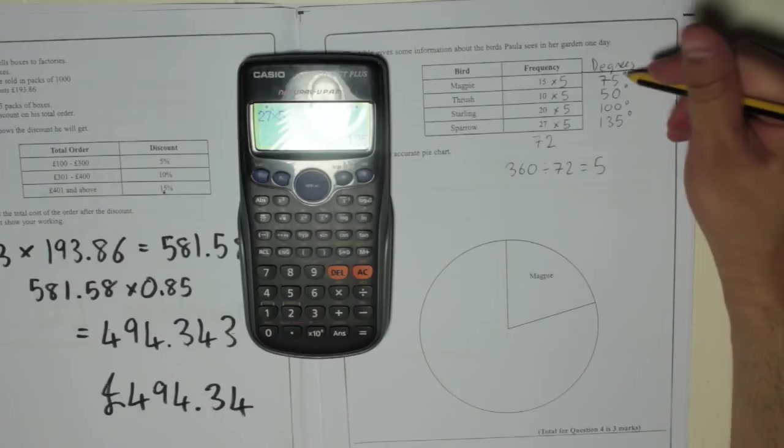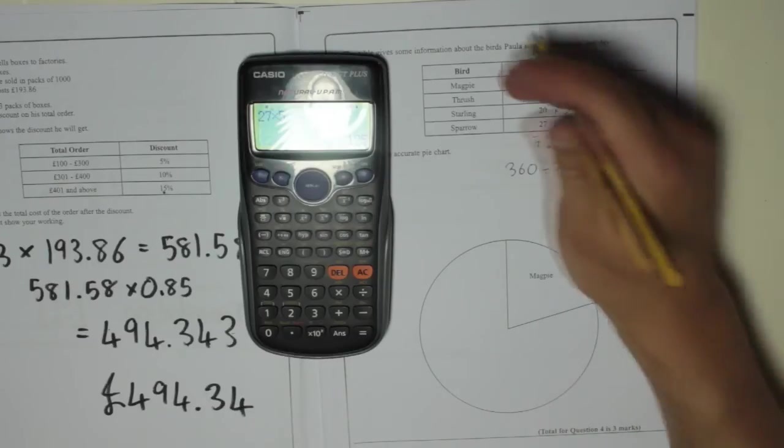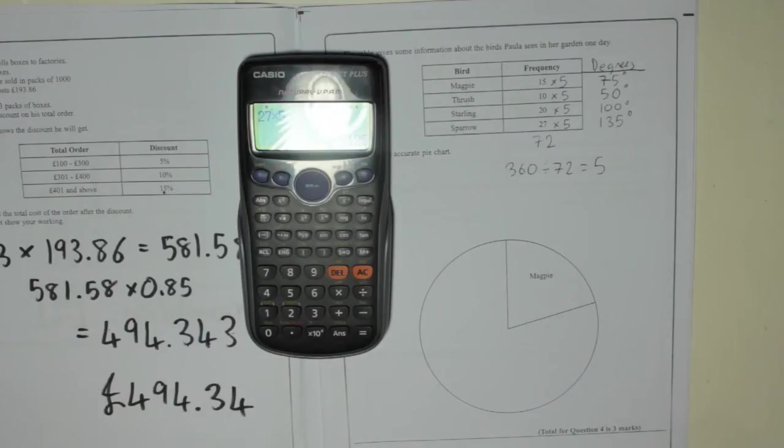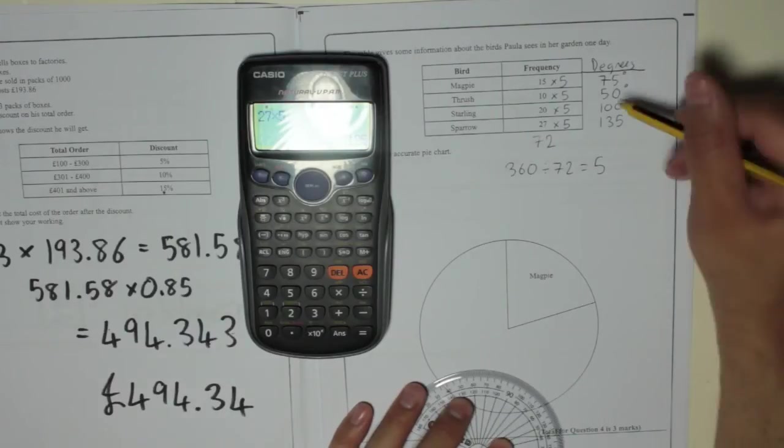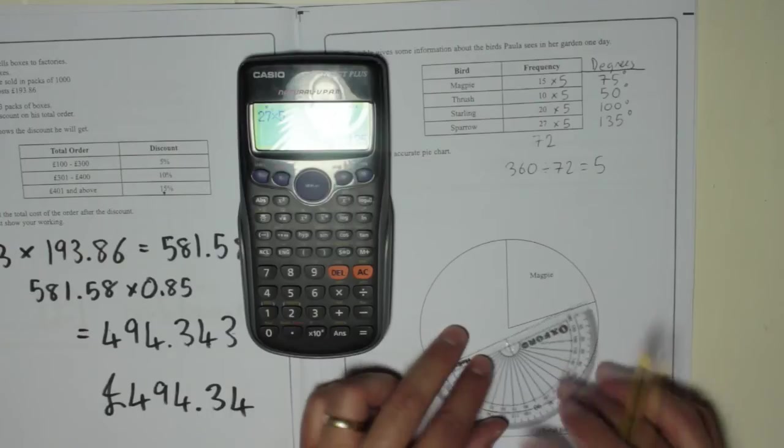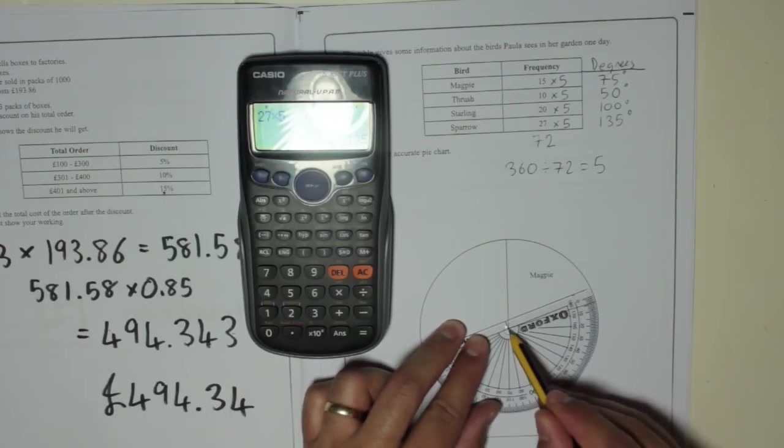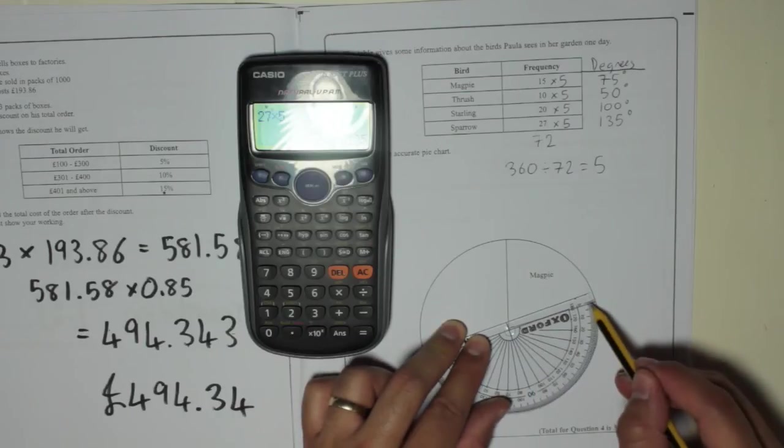Now we're going to put those into there. We've already done magpie, so you've just got to do the other three. We're going to do thrush 50 degrees. Get that point there with the middle of the protractor. Get zero lined up.